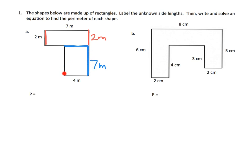Now that we know this is seven, going across we know this piece is also seven. We know this length is two, this length is seven, and this entire length is nine. We also know this piece here is four. So if this piece down here is four, that means this piece here is also four. And since all the way across has to be seven, if this piece is four, then this little missing piece right here has to be three.